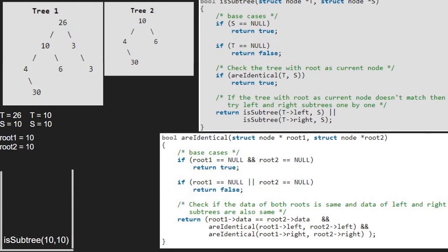We compare root1 and root2's data. Since both are equal, we call for the left child of root1 and root2 in our areIdentical function using a call stack.